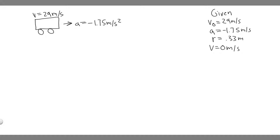So we're trying to solve for two things here, but let's just first understand what's going on. We have this car with wheels, and we know it's traveling at 29 meters per second. Then the person's going to slam on their brakes and start decelerating at 1.75 meters per second squared. The acceleration is negative because it's slowing down, and it's going to slow all the way down to a stop.